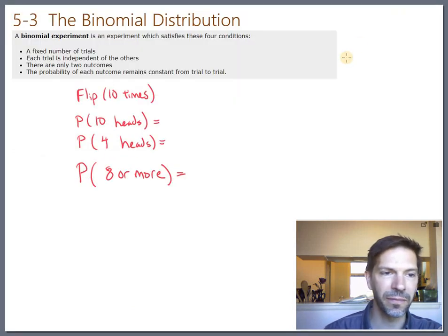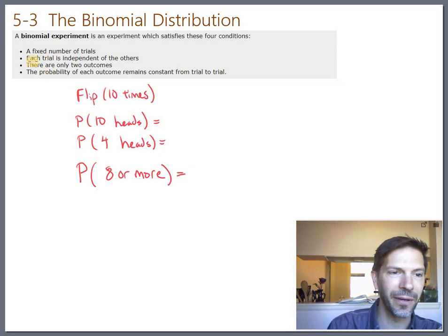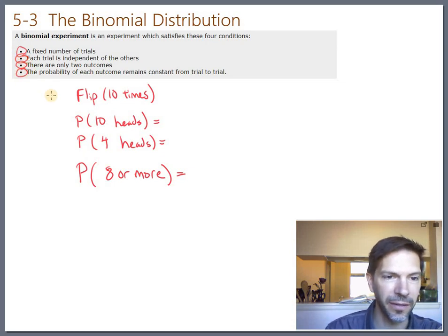let's make sure that we have verified all of the conditions are met for these three problems. So we do have a fixed number of trials. We're going to flip the coin 10 times. Coin flips are independent of each other. What happens once doesn't affect the next time. You get heads or you don't get heads. And the probability should stay the same from trial to trial. So we're good on all of those.